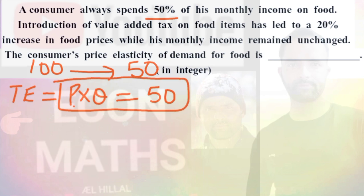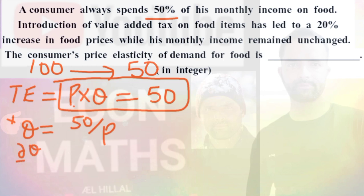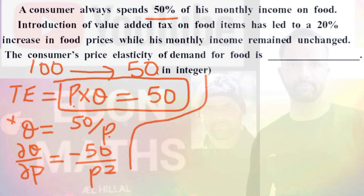Now if we solve for Q, we have Q = 50/P, by transposing P to the right-hand side. Taking the derivative of Q with respect to P — that means dQ/dP — since P is in the denominator, it comes out to be minus 50 upon P squared. I hope you know how to calculate the derivative; I have explained it a number of times.